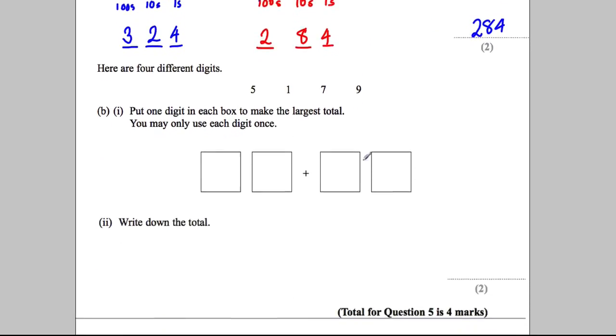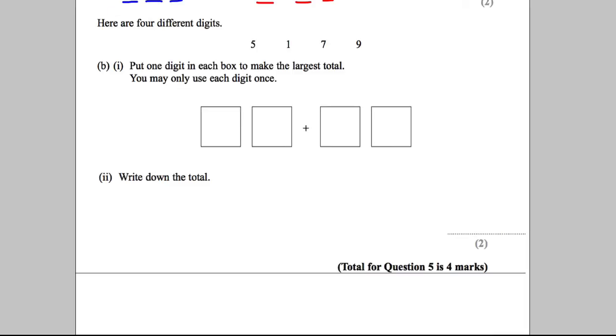Okay, next part. Now it's important we read the question carefully. Here are four different digits. We've got a 5, a 1, a 7 and a 9. Now put one digit in each box to make the largest possible total. You may only use each digit once.